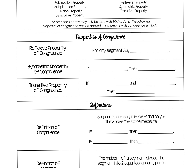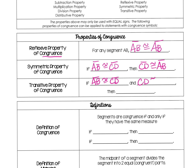Now we are also going to look at the properties of congruence. The reflexive property is when they're congruent, so AB is congruent to AB. The symmetric property still works the same way — we flip, so if segment AB is congruent to segment CD, then CD is congruent to segment AB. The transitive property works the same also: if segment AB is congruent to segment CD and CD is congruent to EF, then AB is congruent to EF. The only thing that's different is the congruent symbol.